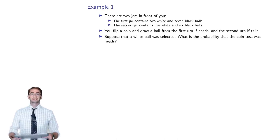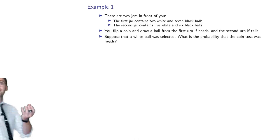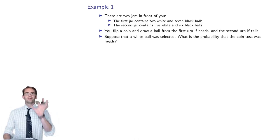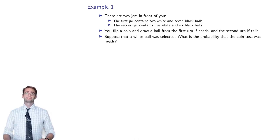The way to think about this is that I step off camera, flip a coin, and pull a ball out of an urn. Now I'm coming back and I'm holding a white ball. All you know is that at the end of this random process that involved flipping coins and reaching into urns, I'm now holding a white ball. We want to use Bayes' formula to recover the probability — how likely is it that the coin toss was heads?